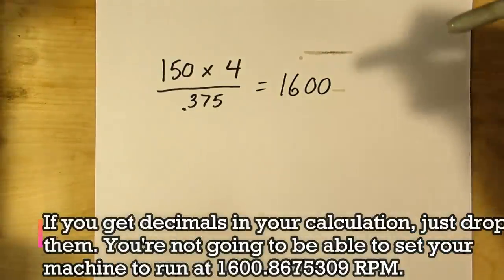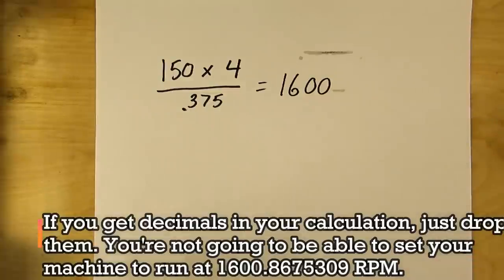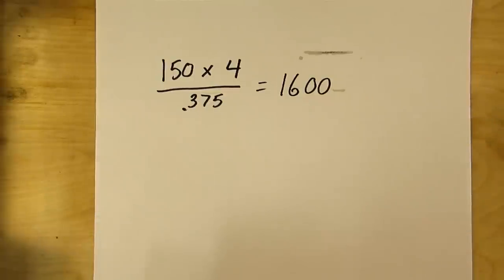We do 150 times 4, that's 600, divided by 0.375, and we end up with 1600 rpm. Now of course you would then go ahead and choose whichever speed option you have that's close to that but without going over.